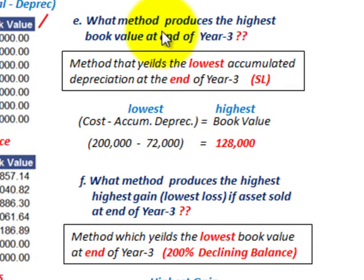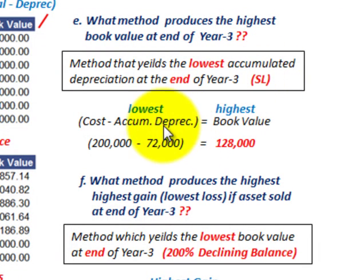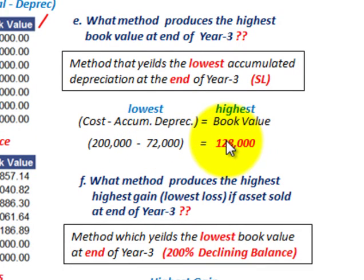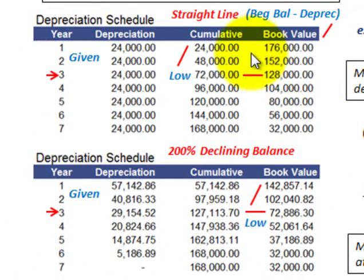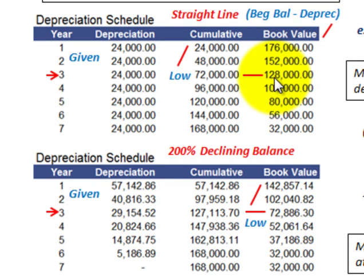What method produces the highest book value at the end of year three? The answer is the method that yields the lowest accumulated depreciation at the end of year three — which is straight line. Book value equals cost minus accumulated depreciation, so the lowest accumulated depreciation gives the highest book value. For straight line, accumulated depreciation at year three was $72,000, giving a book value of $128,000.